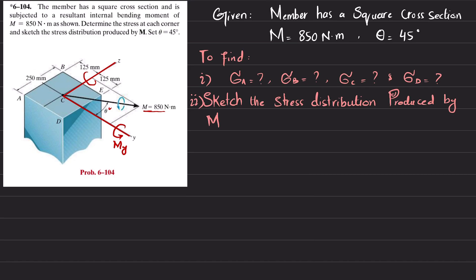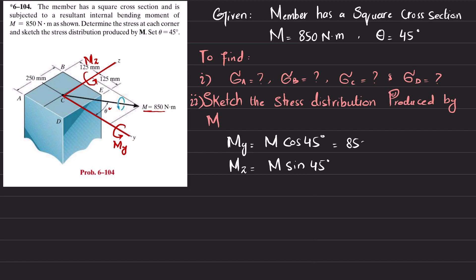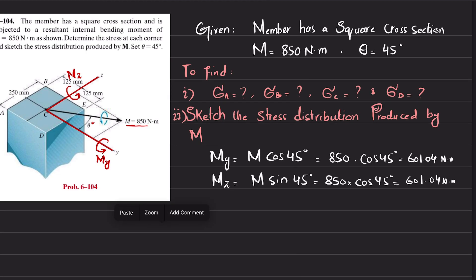This component is also counterclockwise and is represented as Mz. These two components: My is equal to M times cos(45°), and Mz is equal to M times sin(45°). So My = 850 × cos(45°) = 601.04 Newton-meter, and similarly Mz = 850 × cos(45°) = 601.04 Newton-meter. Both components My and Mz have been calculated.